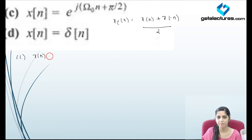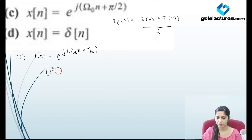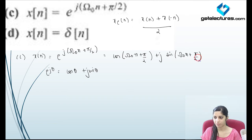Look at the first part: x(n) is e to the power j(omega_0 n + pi/2). We have learned that e to the power j*theta equals cos(theta) plus j*sin(theta). So this is going to be cos(omega_0 n + pi/2) plus j*sin(omega_0 n + pi/2). If I find x(minus n), replacing n with minus n, this becomes cos(pi/2 minus omega_0 n).